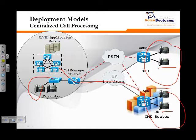One of the advantages of centralized call processing is that everything is managed and administered directly in the head office, rather than having one administrator here and there. The disadvantage is that the branch office will always depend on the WAN connection for complete communication, unless you provide an additional service such as SRST. There's an advantage and disadvantage to going centralized, but cost-wise, centralized call processing makes more sense. A single cluster of centralized call processing can handle up to 30,000 phones.